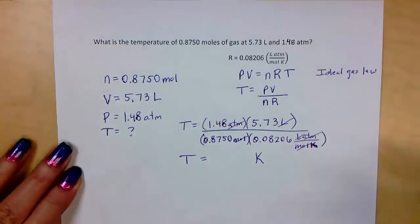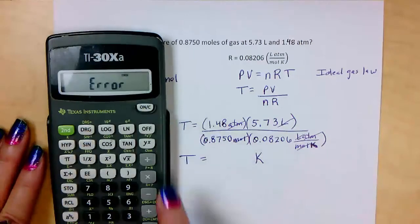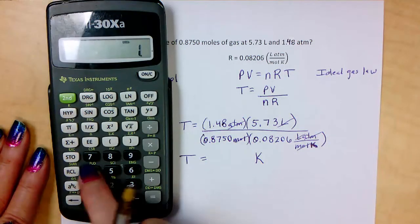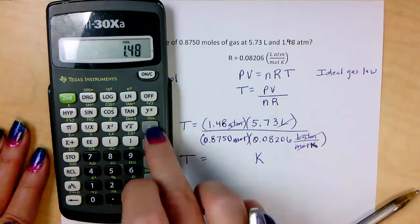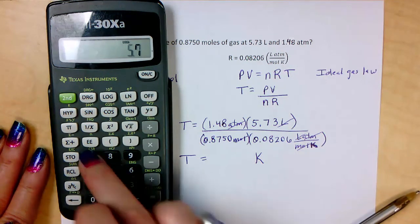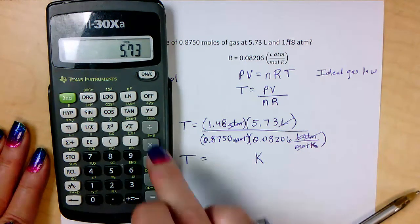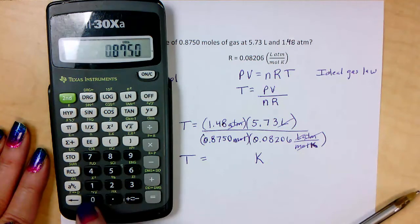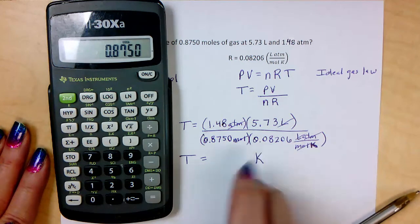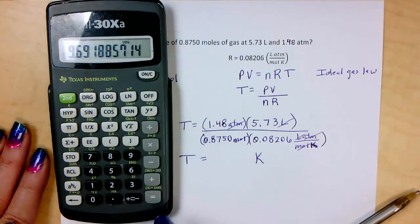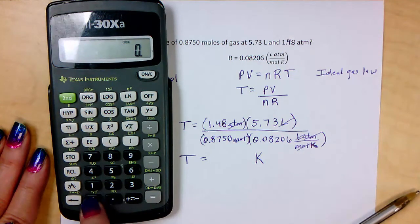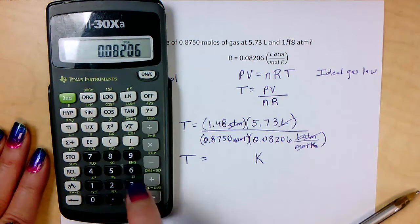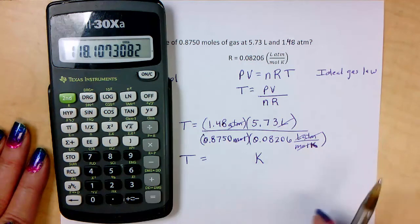Okay. So now we're ready for our calculator. We have 1.48 times 5.73 divided by 0.8750. This number is also in the denominator, so divided by 0.08206. And that equals a big long number.